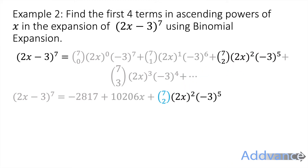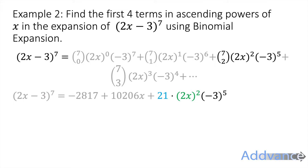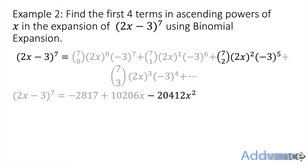For r = 2: 7C2 = 21, (2x)² = 4x² (remember it's 2x squared, so 2x × 2x = 4x² — don't lose marks there), and (−3)⁵ calculated gives 21 × 4 × (−3)⁵ = −20412x². It's completely normal to get really large numbers in these questions.